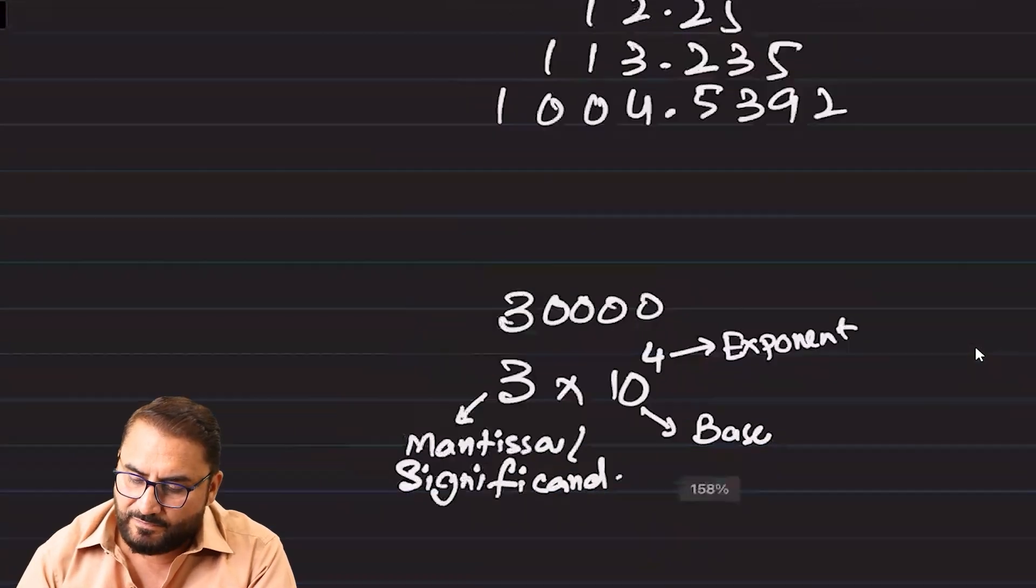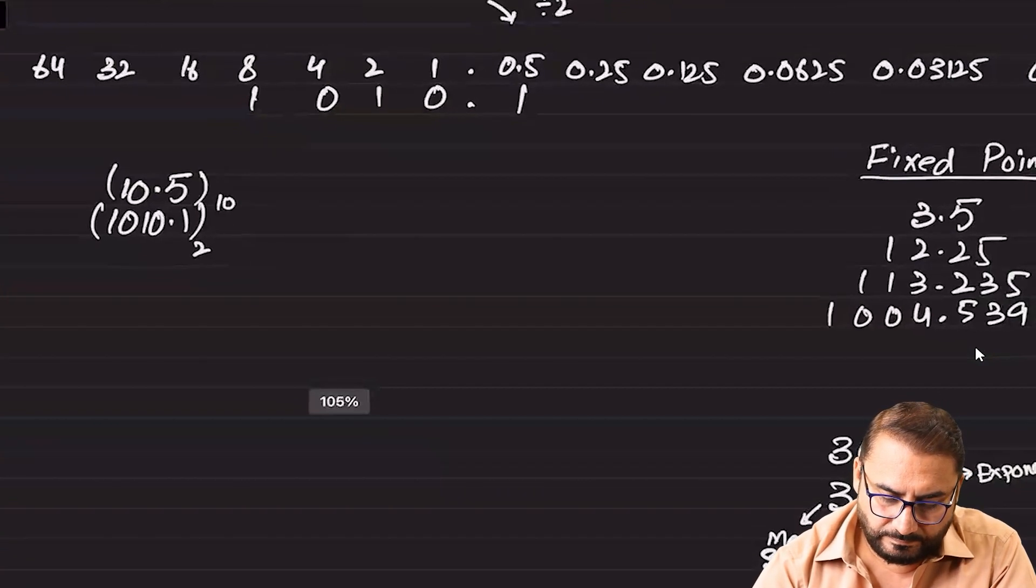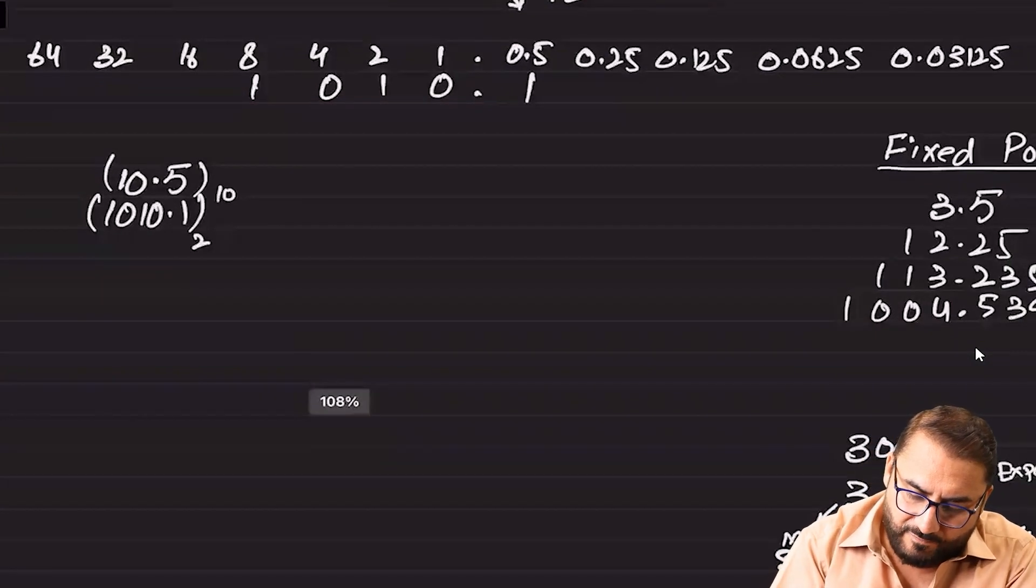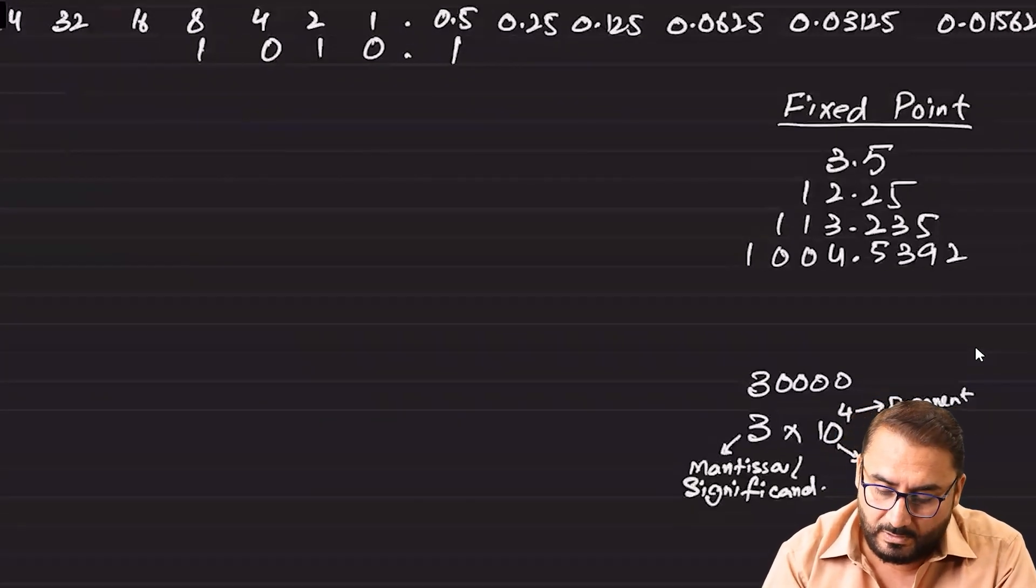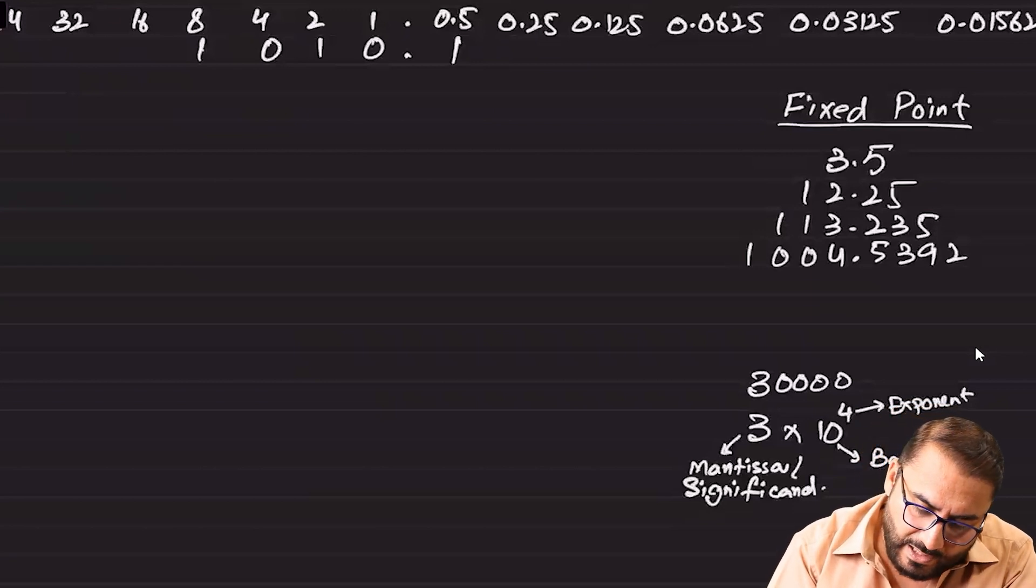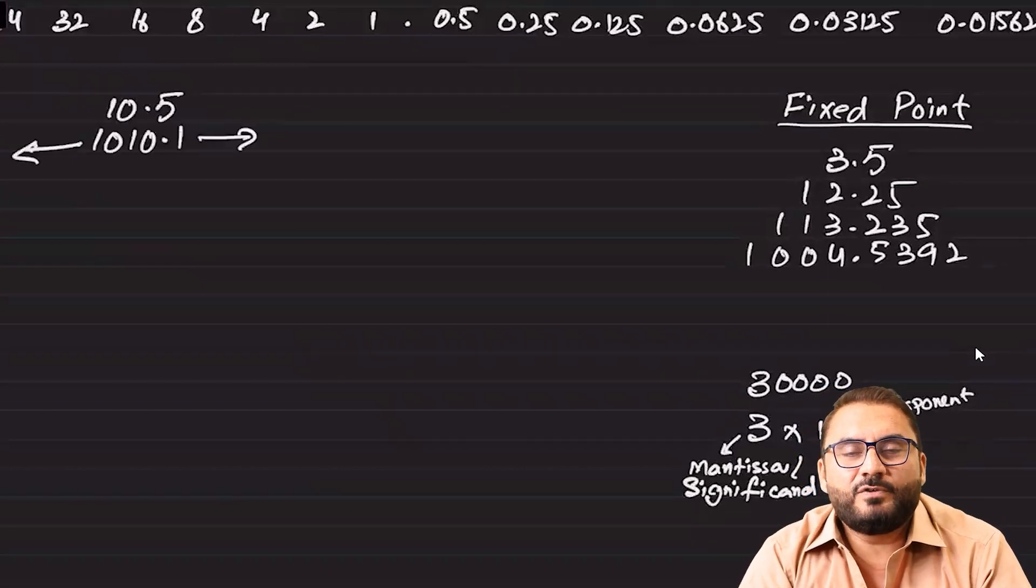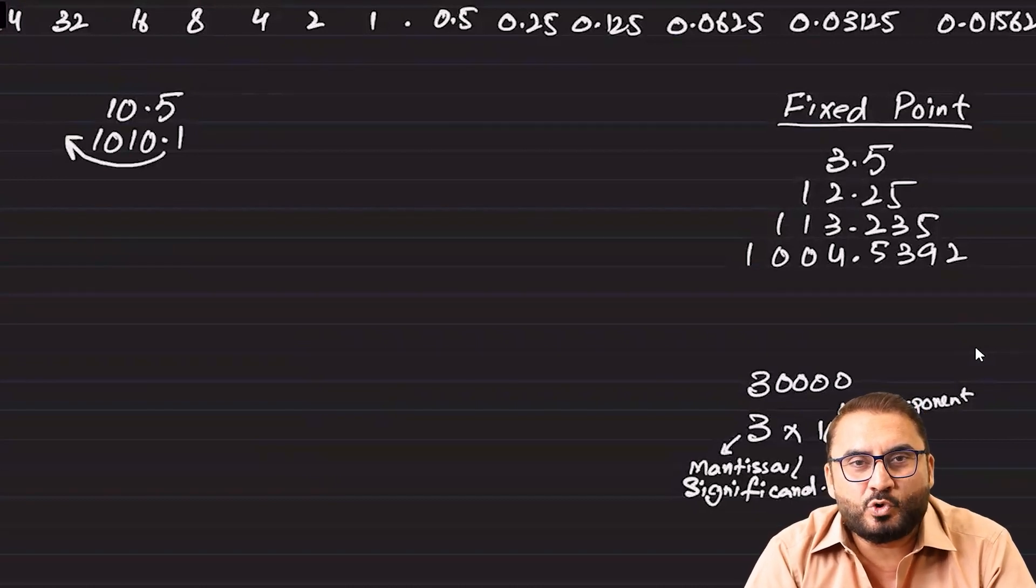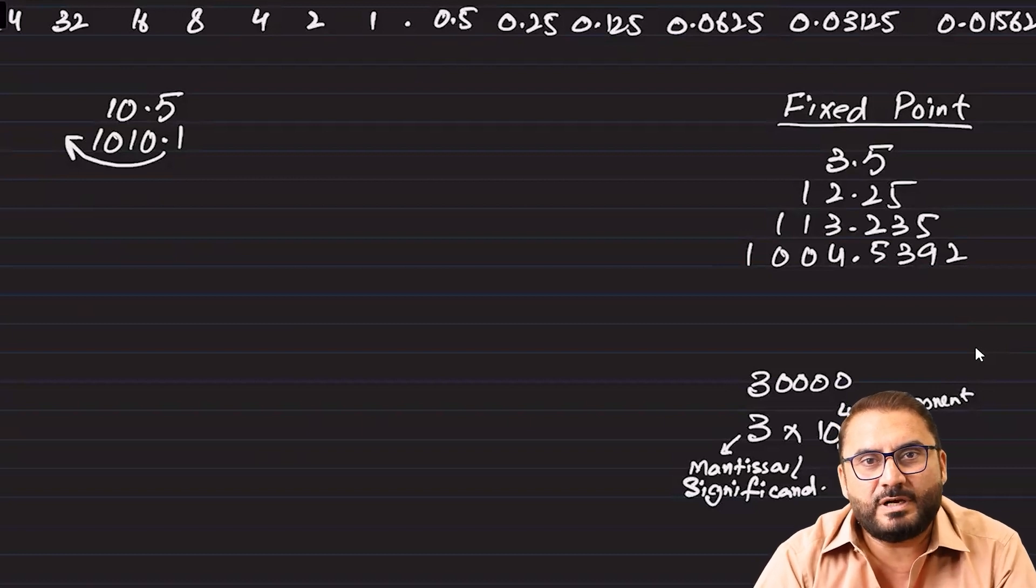So 10.5 becomes 1010.1 and I told you that no leading or trailing zeros, not at all. So we will float the point out. Why have we floated the point out? For the reason that if you don't, computer would have no idea where the point lies between the bits as there is no such concept of storing a point. So we would have no idea where the point lies because we are not actually storing the location of the point in a number.